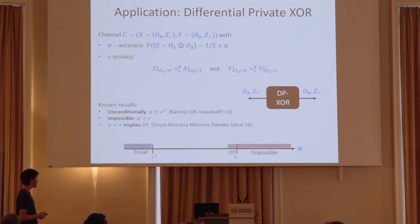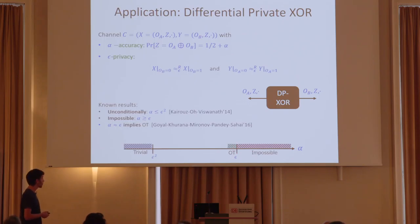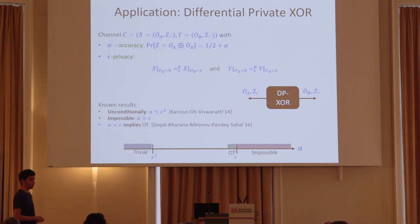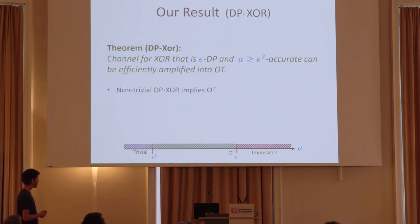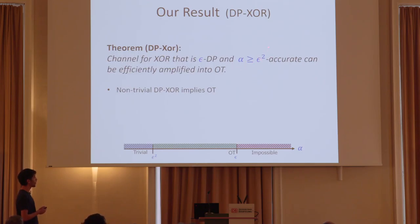Goyal et al. showed recently that if the agreement is the best possible for a given epsilon privacy, the protocol implies OT. But there is still a large gap between what we know we can implement trivially and what we know implies OT. Using our main theorem — by measuring the leakage with log-ratio leakage instead of statistical distance — we close this gap. Up to a constant, we show that any channel computing differentially private XOR with epsilon differential privacy and alpha accuracy, if alpha is larger than epsilon squared, can be amplified into oblivious transfer.